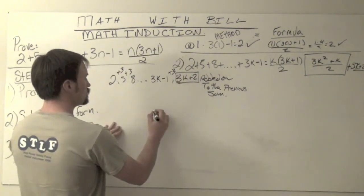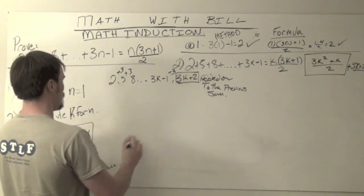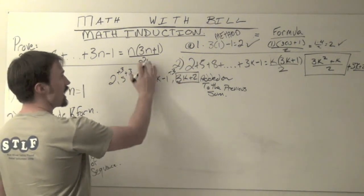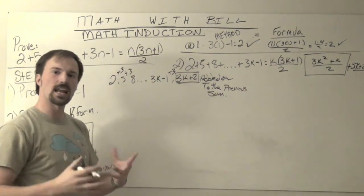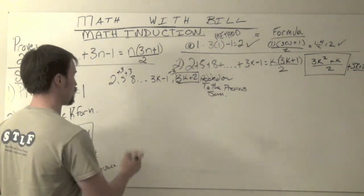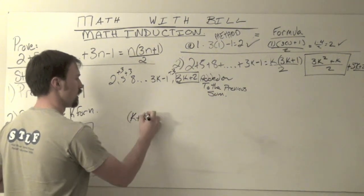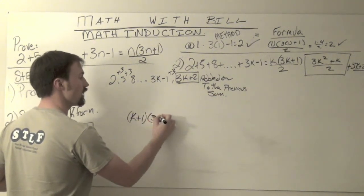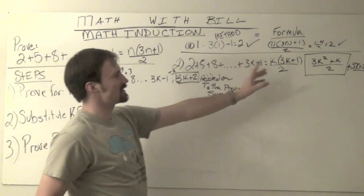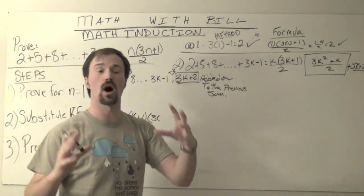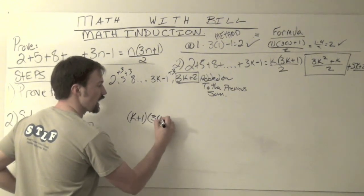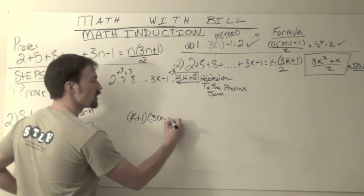So looking at our formula, we're now substituting in, instead of just k or instead of just the n or the k over here, now we want to do the quantity of k plus 1. So I've got k plus 1 times 3, and since it says 3 times k, it's really 3 times this quantity. So it's 3 times the k plus 1 plus 1 more.